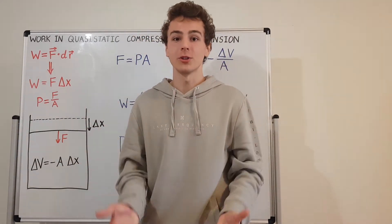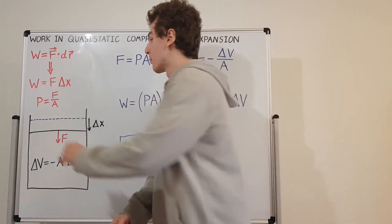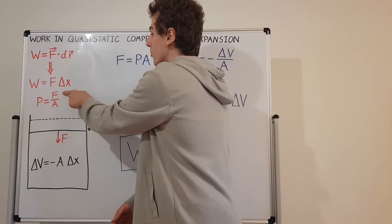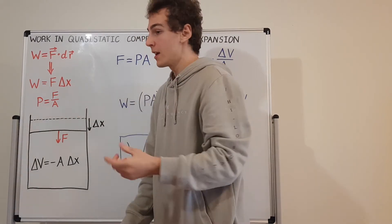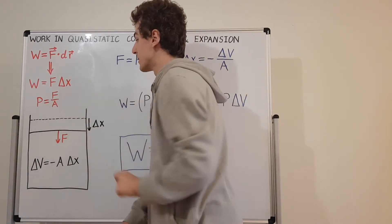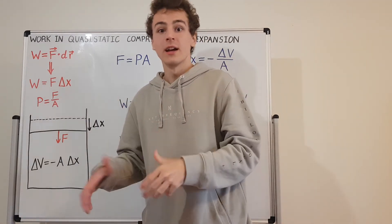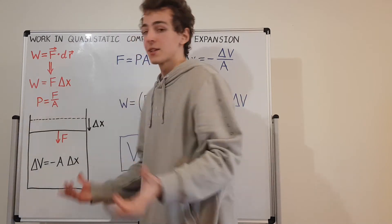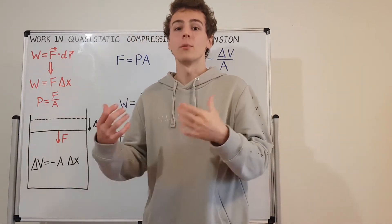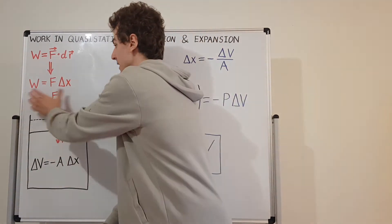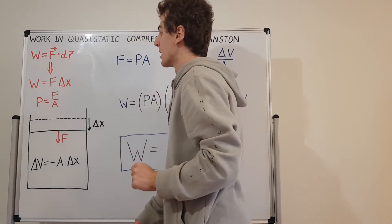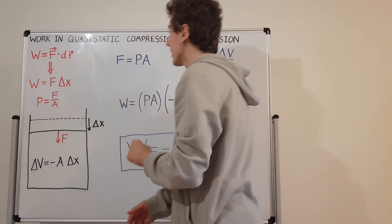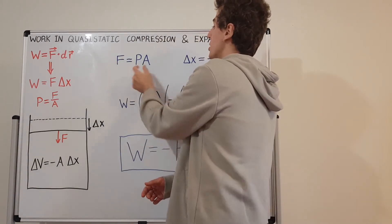Another relevant quantity we need is pressure. Pressure is defined as force per unit area — force in newtons and area in meters squared — giving units of pascals, or newtons per meters squared. We can rearrange this expression by multiplying both sides by the area to get: force equals pressure times area.